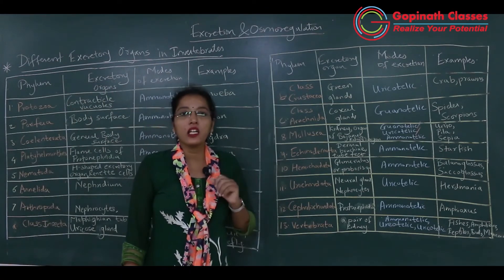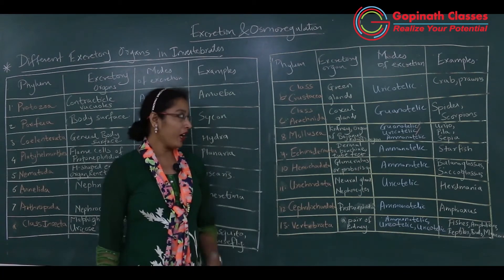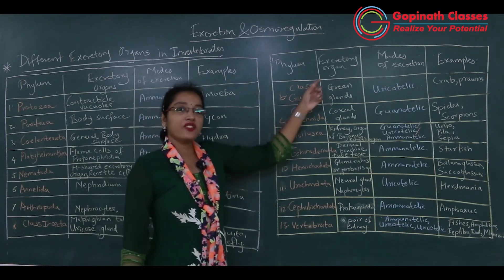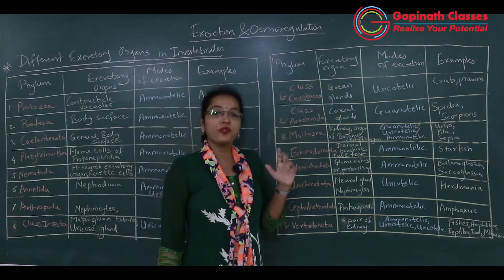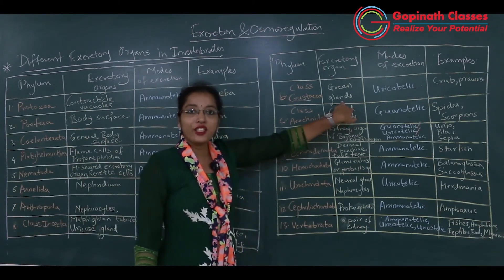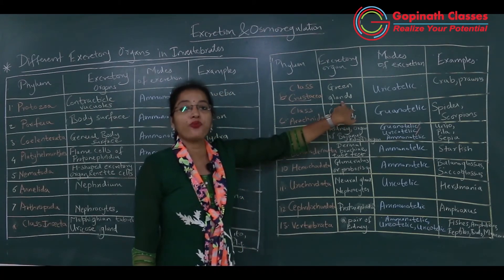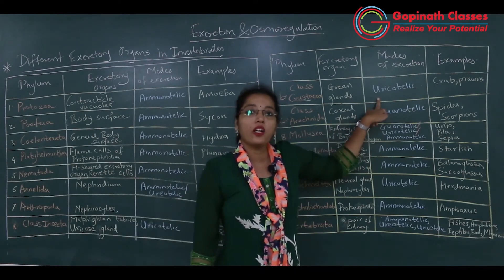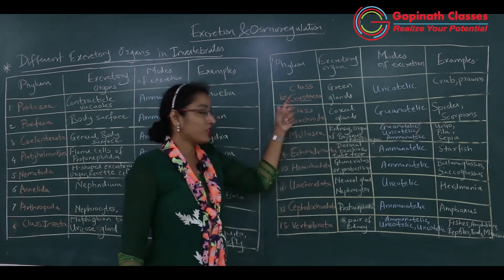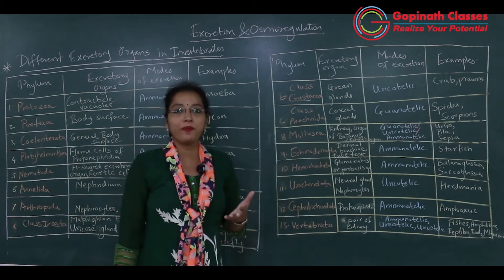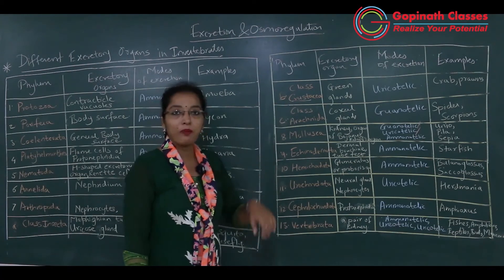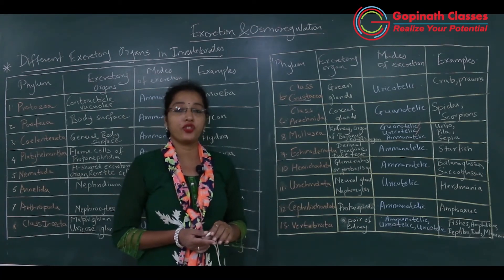Under class Crustacea of phylum Arthropoda, the excretory organ is green glands. Green glands are responsible for excretion of nitrogenous waste in the form of uric acid, so they are uricotelic. Examples of crustaceans include crabs, shrimps, lobsters, and prawns.